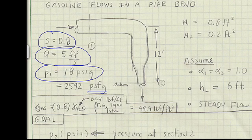Notice that I convert that right away to pounds per square foot gauge because these are consistent units, and that saves me time later on. The area at section 1 is given. The area at section 2 is given.